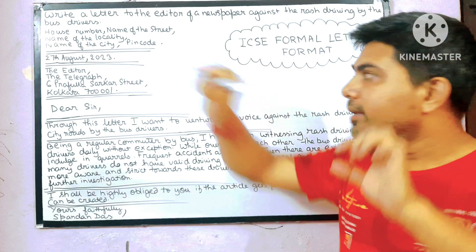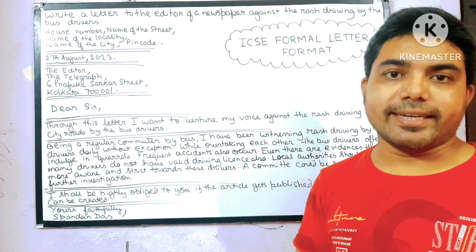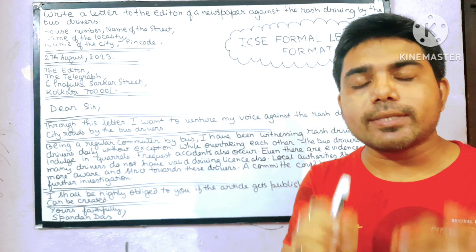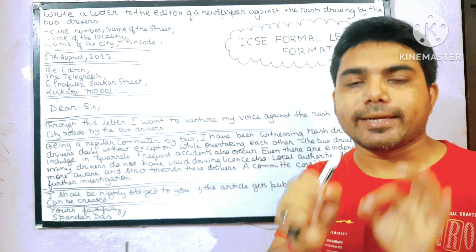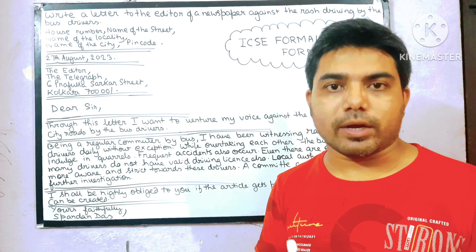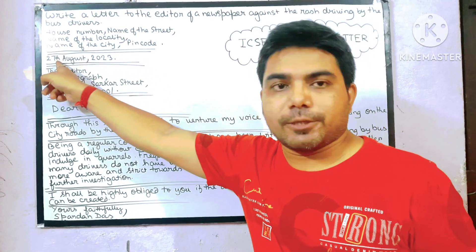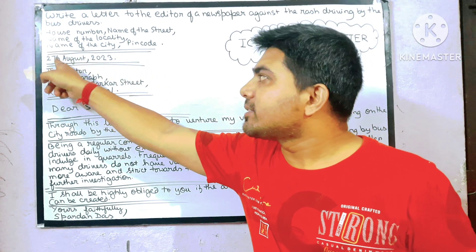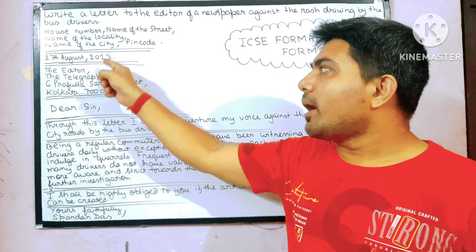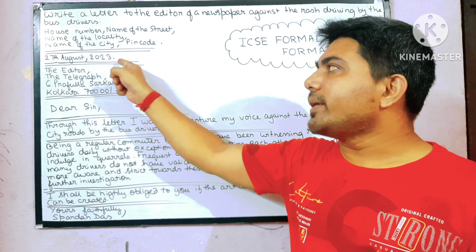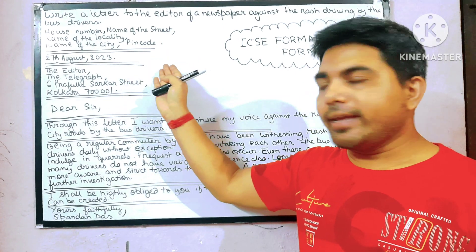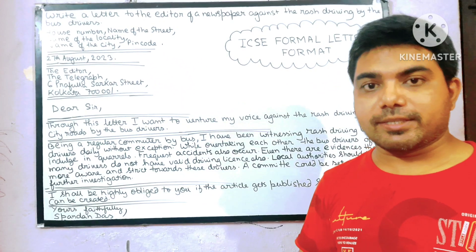After the sender's address, leave a line and then come to the date. For date, always write the present date. For example, today is 27th August — this 'th' should touch the bottom line — comma, 2023, full stop. Next, leave a line, then write the receiver's address.